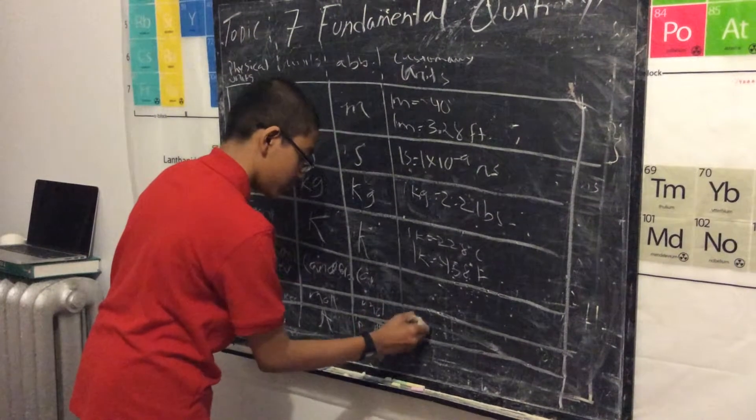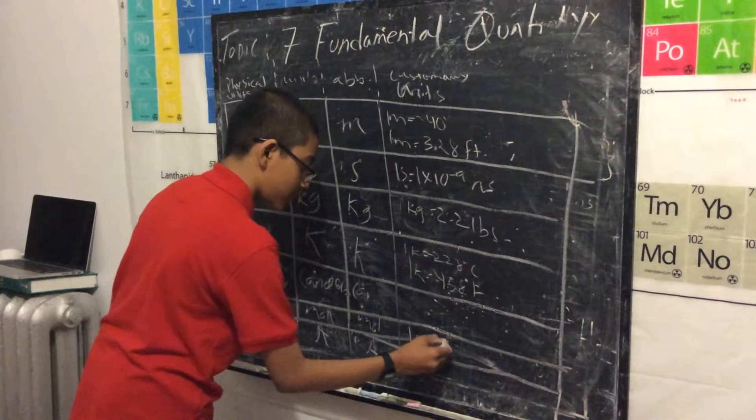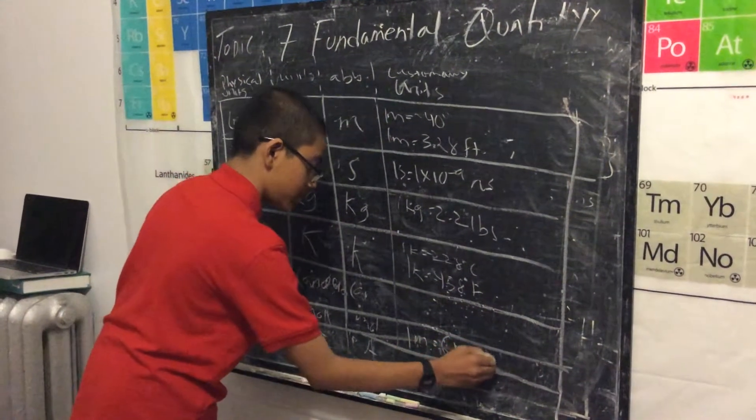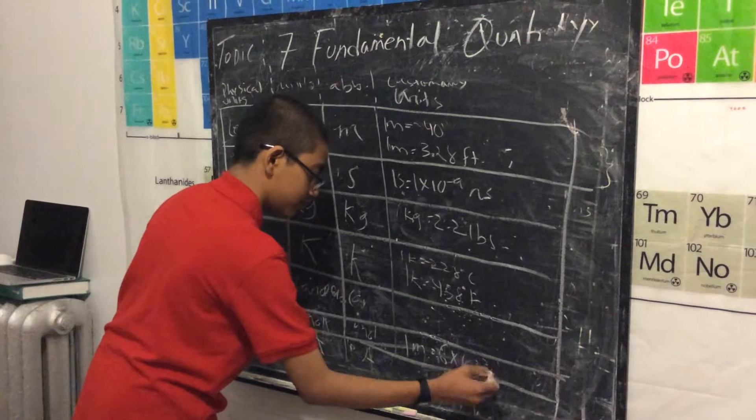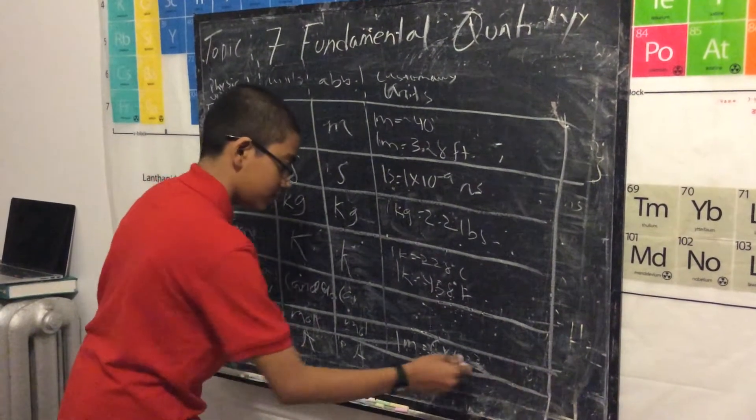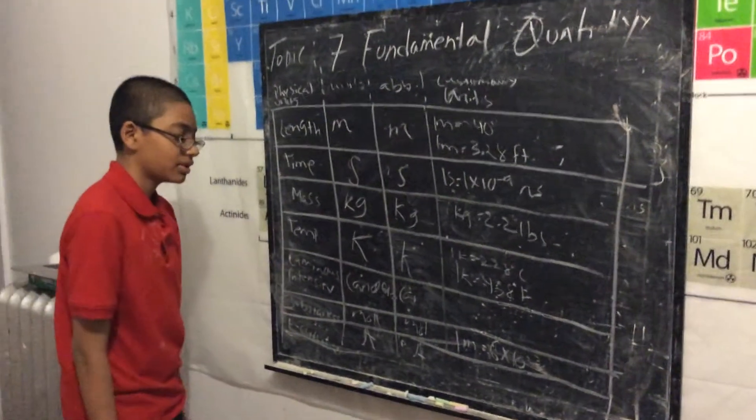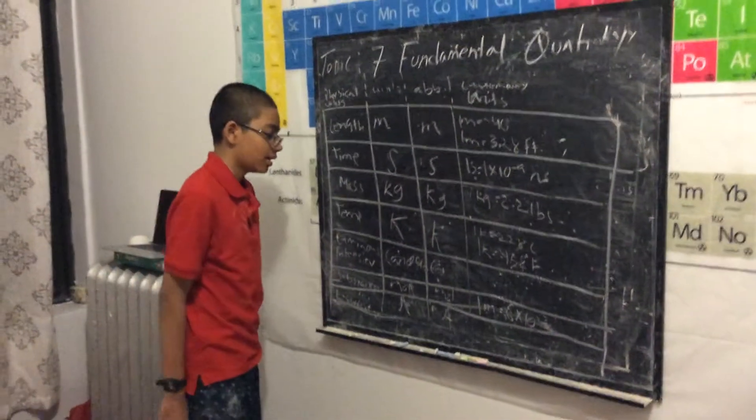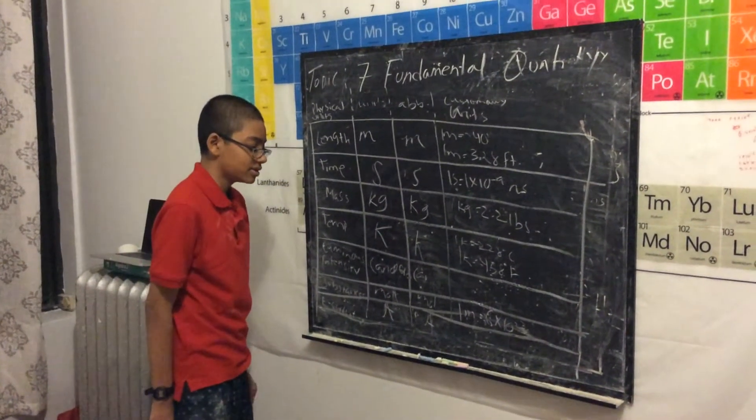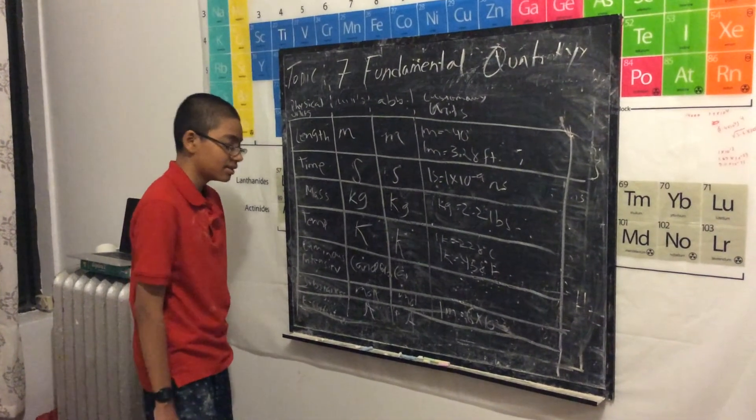One mole is equal to 6 times 10 to the 23 hydrogen atoms. So what we're talking about here is that if you take one mole of hydrogen atoms, there's 6 times 10 to the 23rd of hydrogen atoms in that mole.